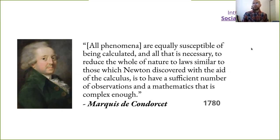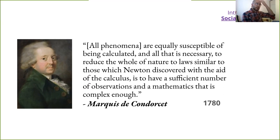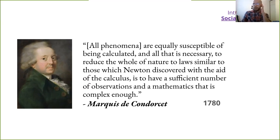The French mathematician Condorcet laid out a similar idea, saying that all phenomena are equally susceptible of being calculated, and that all that is necessary to reduce the whole of nature to laws similar to those Newton discovered with the aid of calculus is to have a sufficient number of observations and mathematics that is complex enough. This already includes the idea of the Newtonian revolution in physics being extrapolated to human society as well.